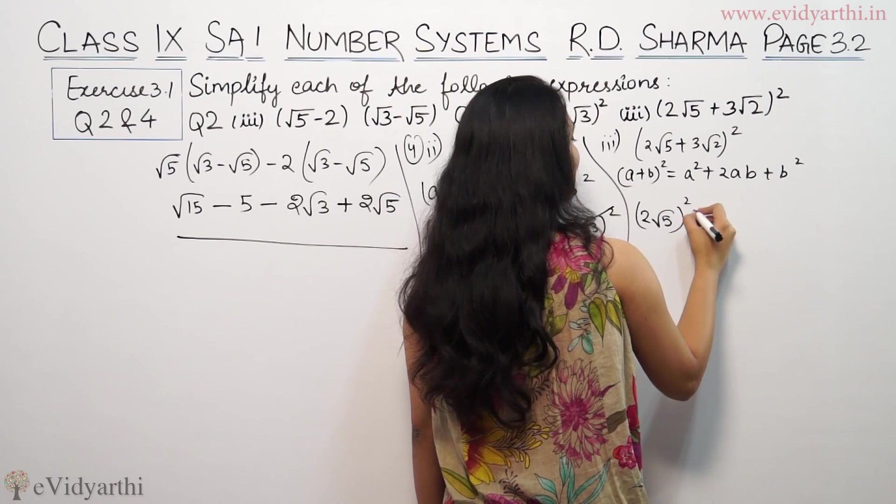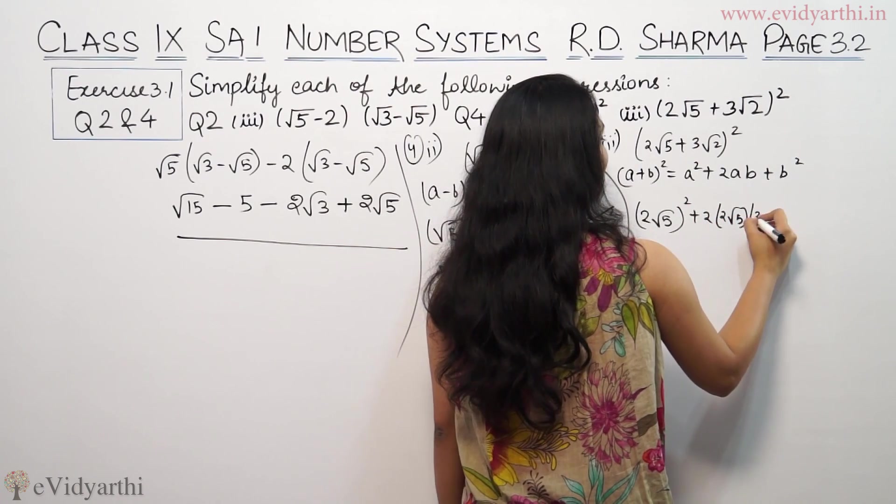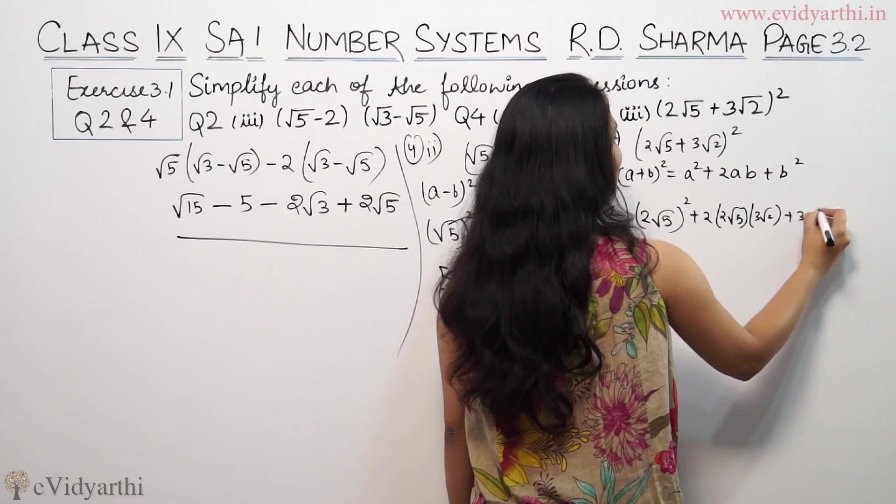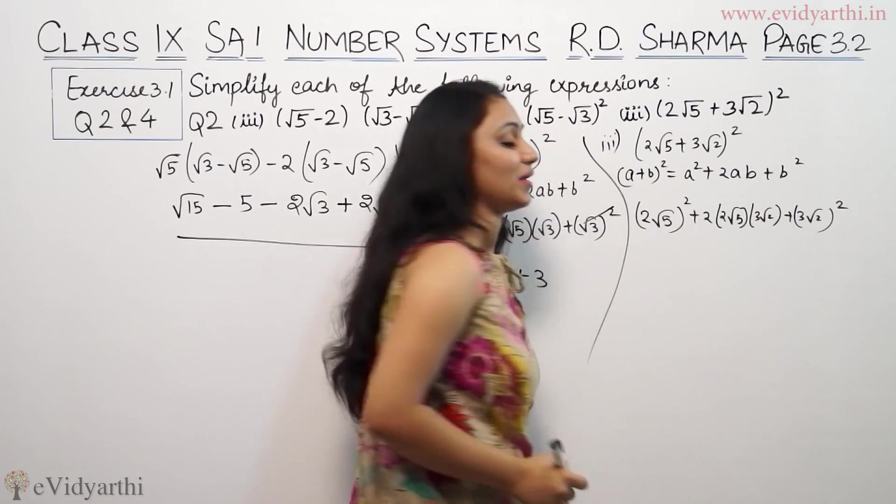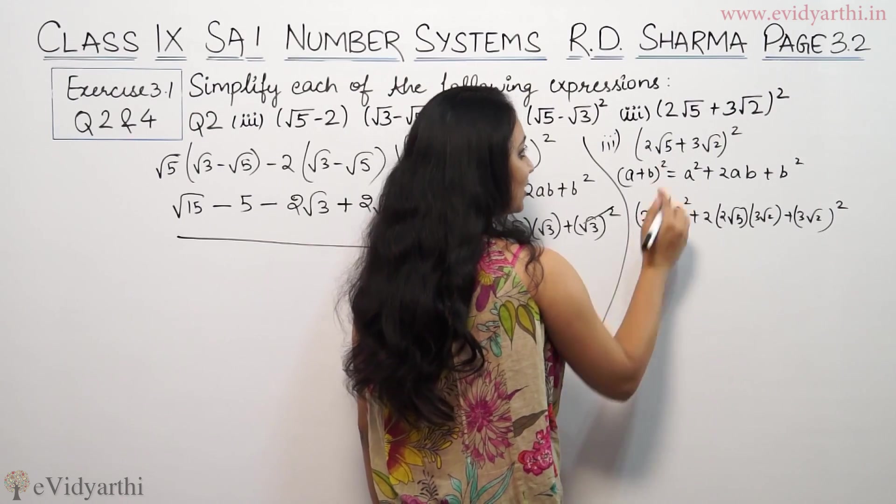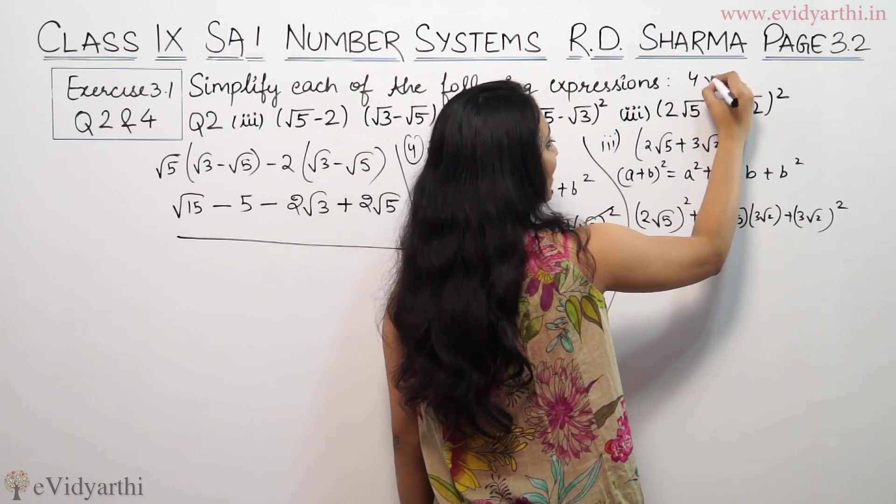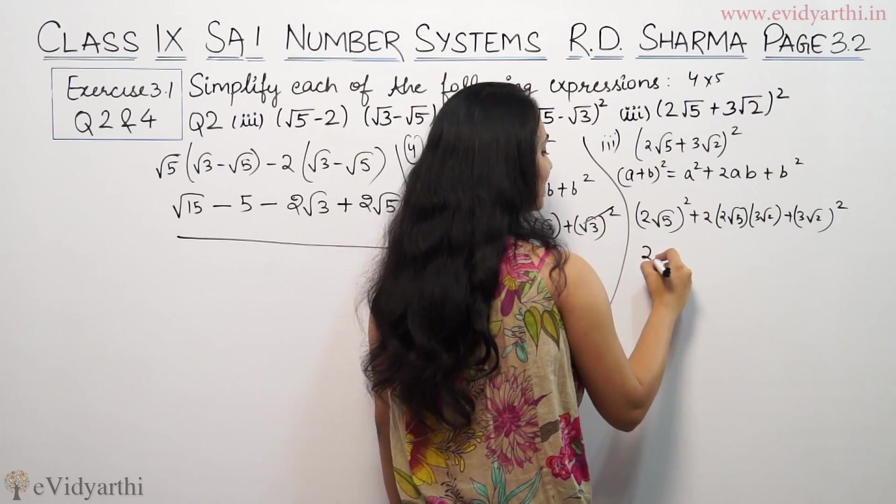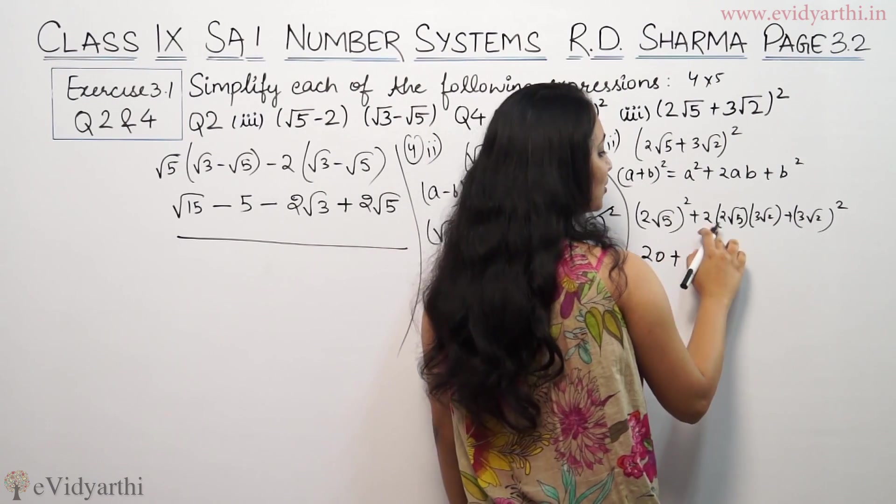So a² is (2√5)² plus 2 into a into b plus b² is (3√2)². So (2√5)², 2² is 4, (√5)² is 5, so 4 times 5 is 20. Plus 2 times 2 is 4, 4 times 3 is 12.